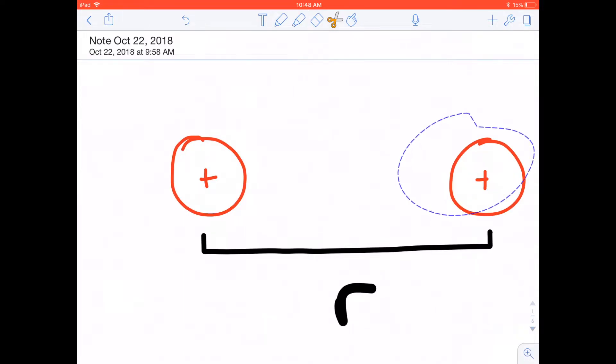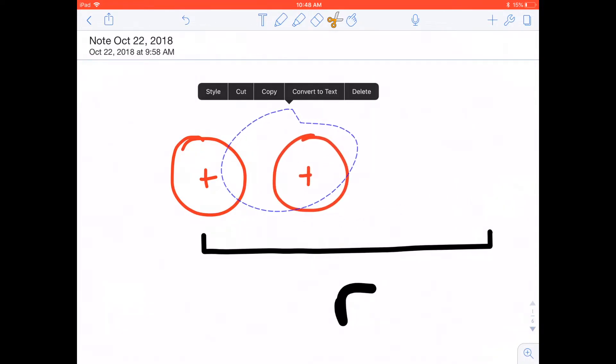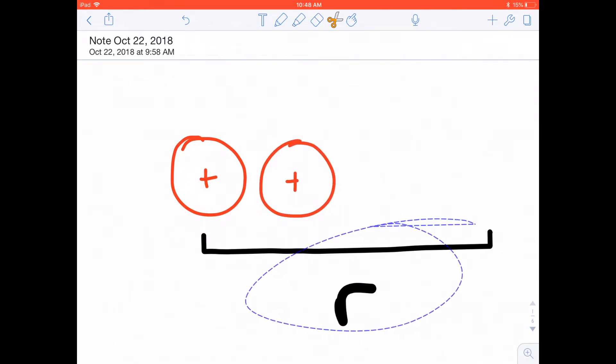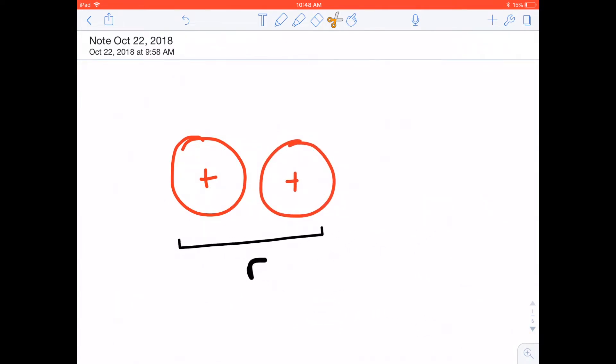If we were to bring these guys closer to each other, let's get them real close, we would see that the distance between them gets a lot smaller. That R gets tiny, and we would know that the force between these two objects would get really big. They have a really big electrostatic force.